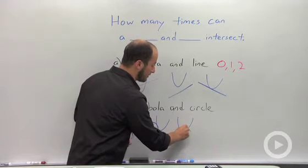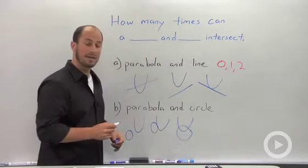You could have a parabola and a circle that crosses at two points.